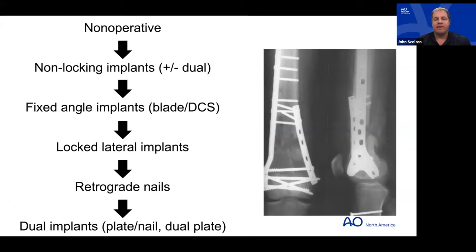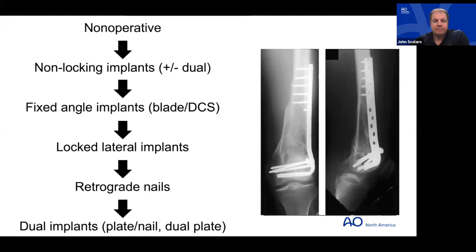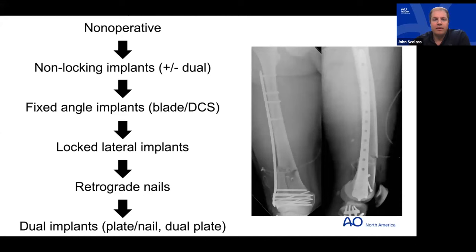Looking back historically: before fixation implants we had non-operative management, then non-locking implants with dual constructs for distal femur fractures — understanding bicolumn fixation even before fixed-angle constructs existed. Then blade plates and condylar screws provided angular stability for a long period, giving way to locked implant technology which drove a lot of the distal femur plates we see today.